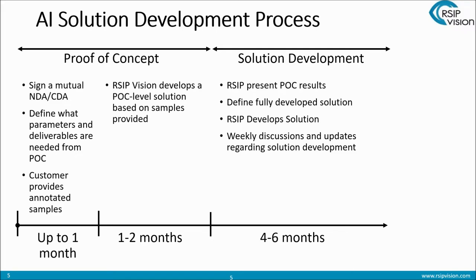Then we start developing the POC-level solution, which usually takes several weeks to a month or two. Once we have the POC ready, and once we know what the required investment would be, we present it to the decision makers in your organization. Once we get the green light, we start defining the full developed solution. This entire process would take a few months, and by the end of the year you can have an up and running AI solution as part of your drug development, drug discovery, or clinical trial processes.